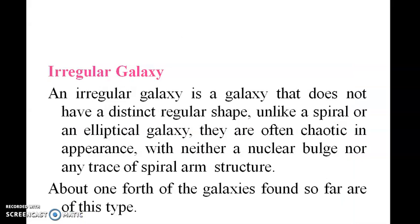An irregular galaxy is a galaxy that does not have a distinct regular shape, unlike a spiral or elliptical galaxy. They are often chaotic in appearance, with either no nuclear bulge or no trace of spiral arm structure.